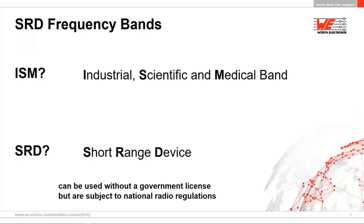ISM stands for Industrial, Scientific, and Medical, and SRD stands for Short Range Device. These are bands available to us that can be used without a government license, but they are still subject to national radio regulations depending on where you are — Europe, the Americas, Japan, Canada — they all have different regulations. These are short-range devices covering a few tens to hundreds of meters, and for that reason we have a number of restrictions.